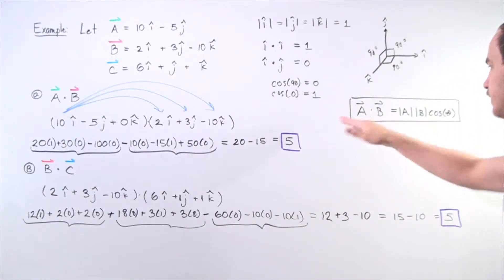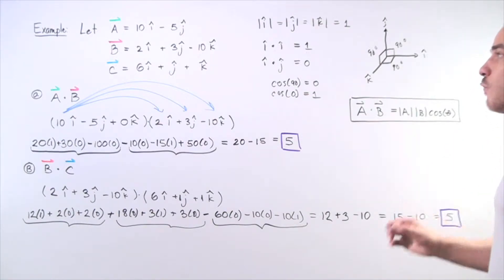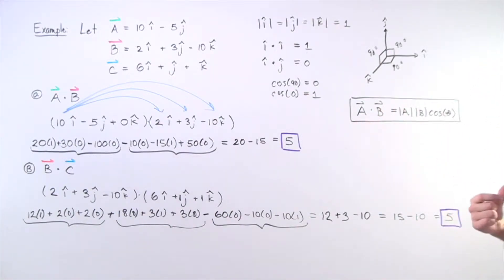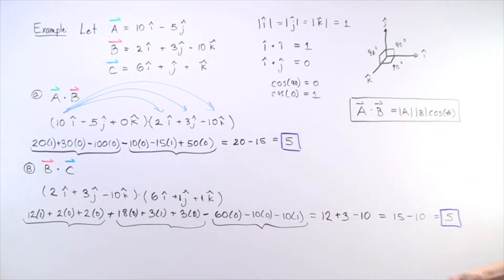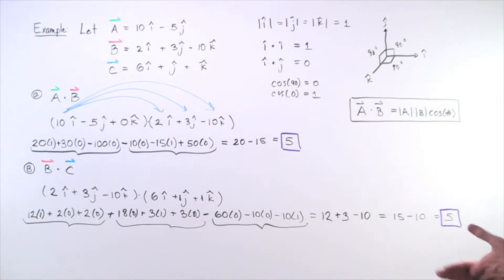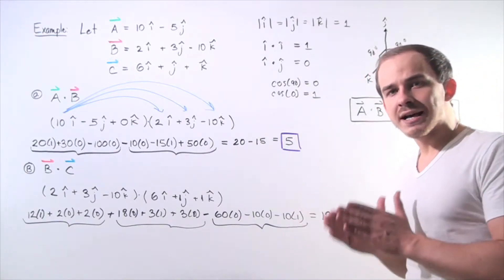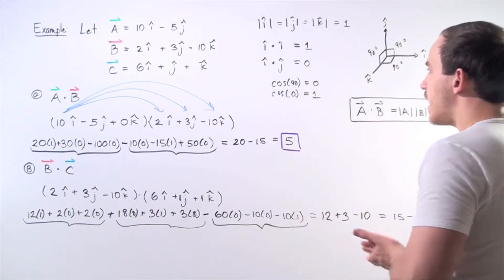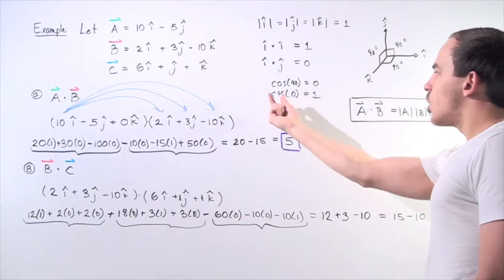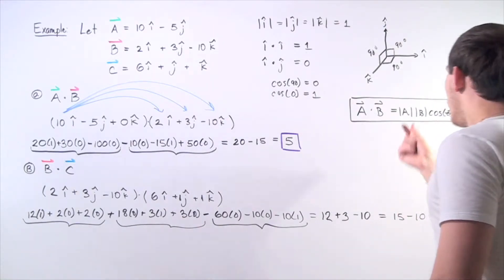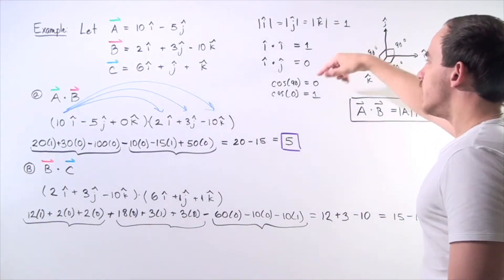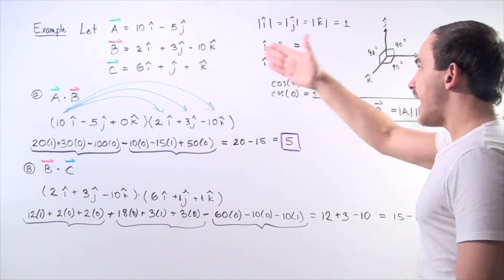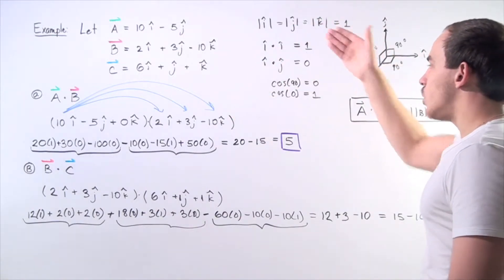Let's recall the formula for the dot product. The formula is given by the magnitude of vector A multiplied by the magnitude of vector B multiplied by the cosine of the angle between them. That basically means that if we take any two unit vectors that lie along the same axis — for example, I hat and I hat — and we take the dot product, we get 1, because cosine of 0 is 1. So we get 1 times 1 times 1 equals 1. Likewise, the dot product of K hat and K hat is 1, and the dot product of J hat and J hat is also 1.